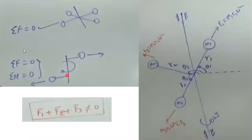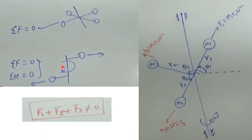Here we can see a plane with two different masses acting on the same plane. In static balancing, we deal with summation of forces alone, so summation of forces will be equal to zero.